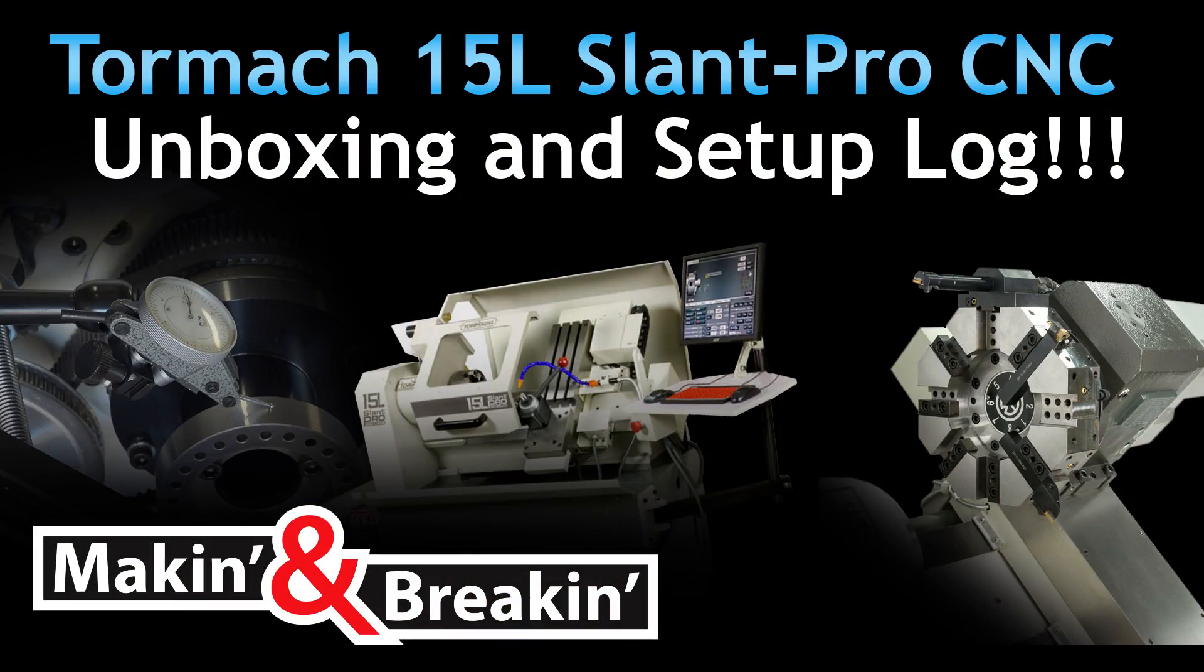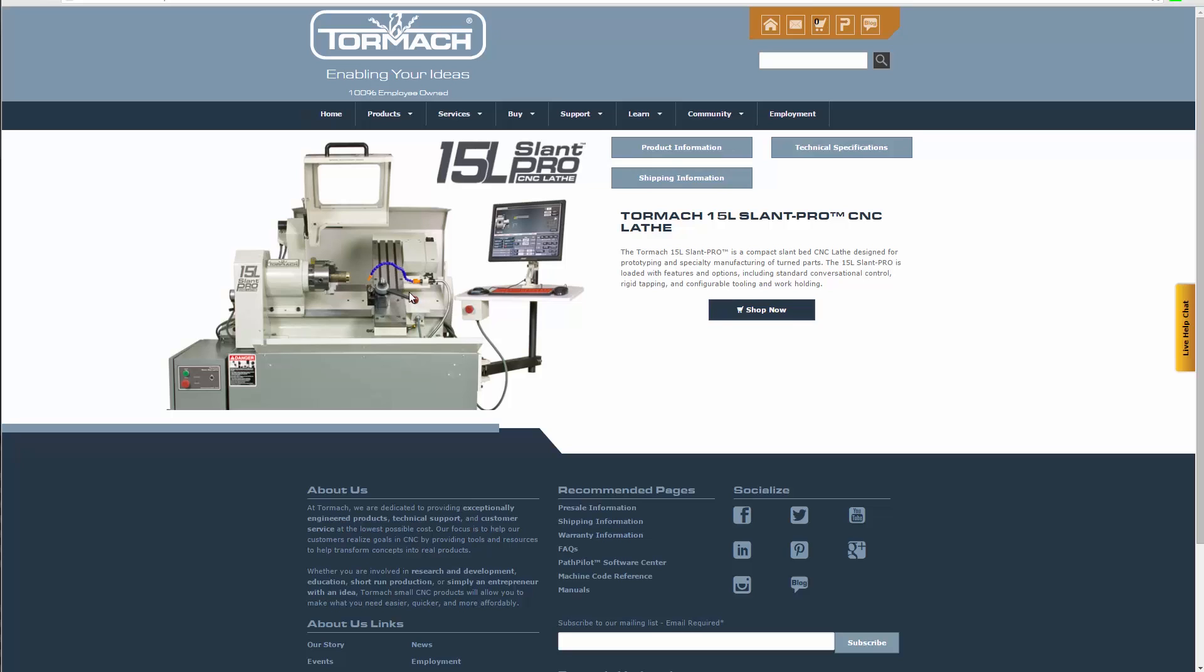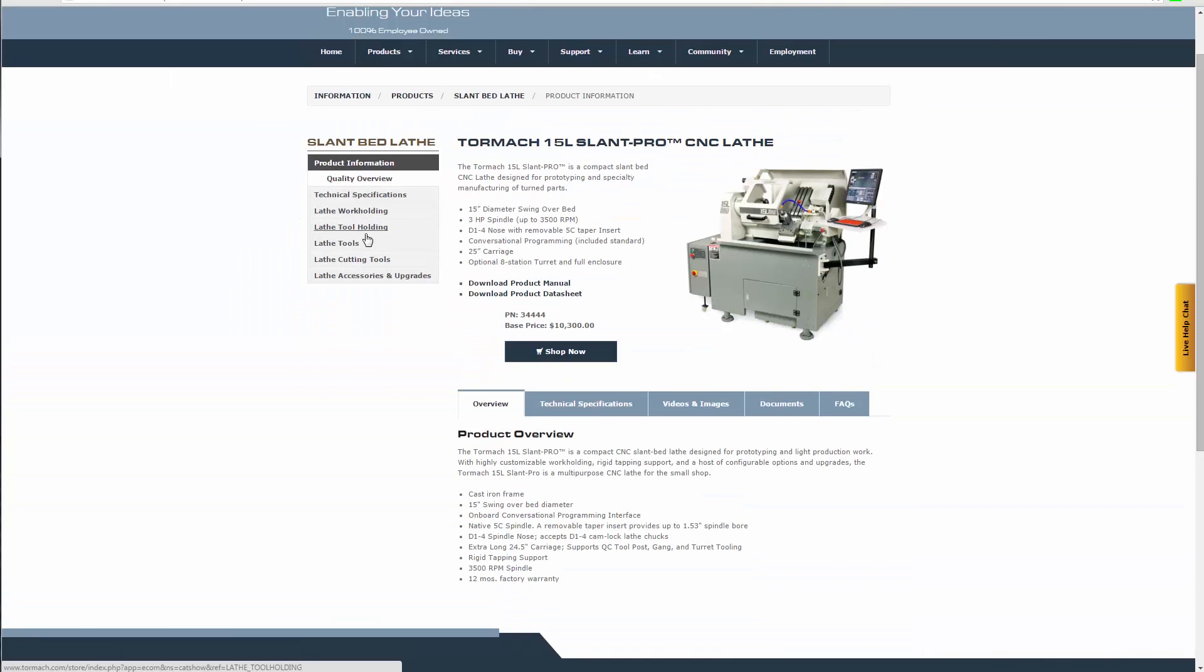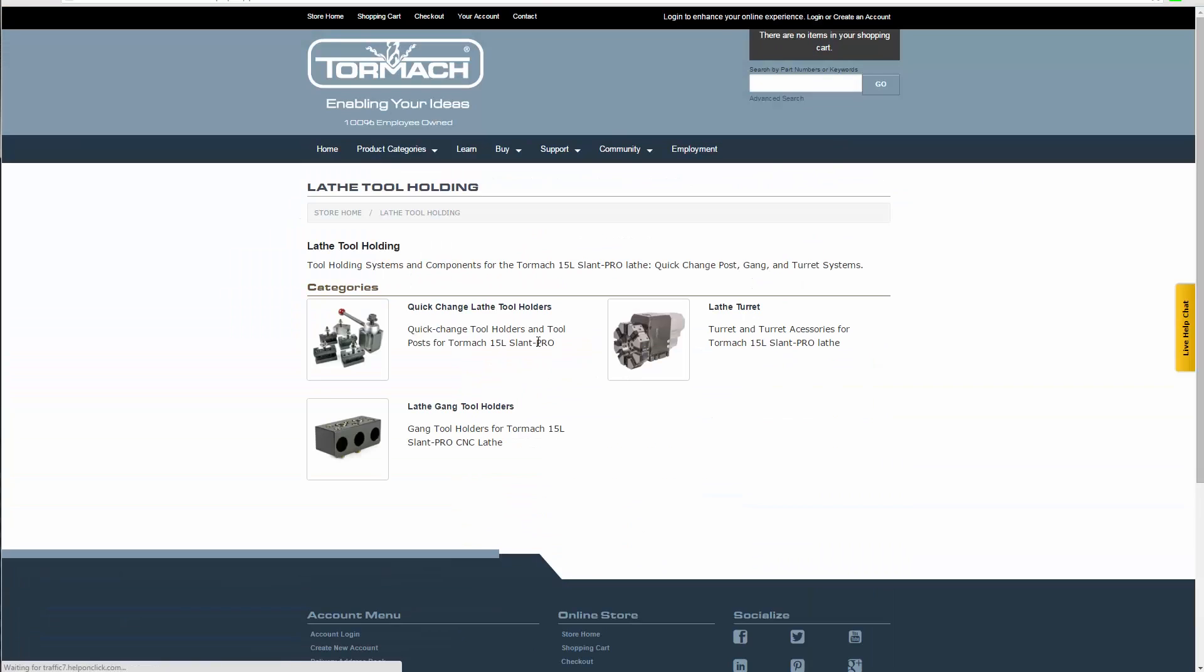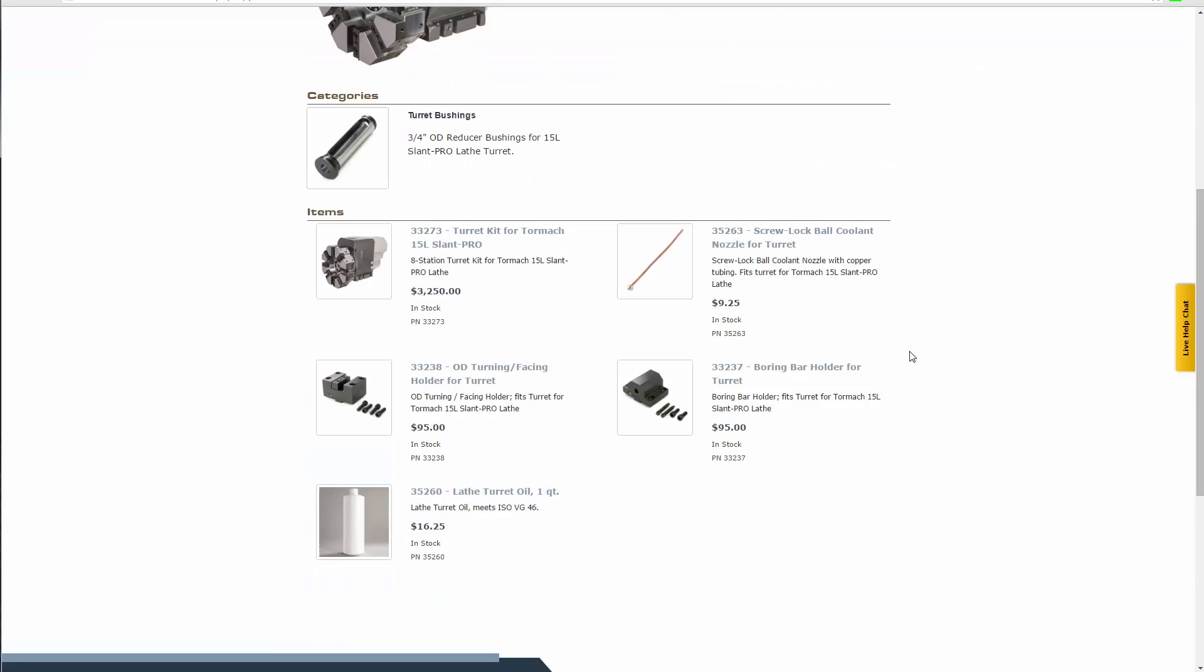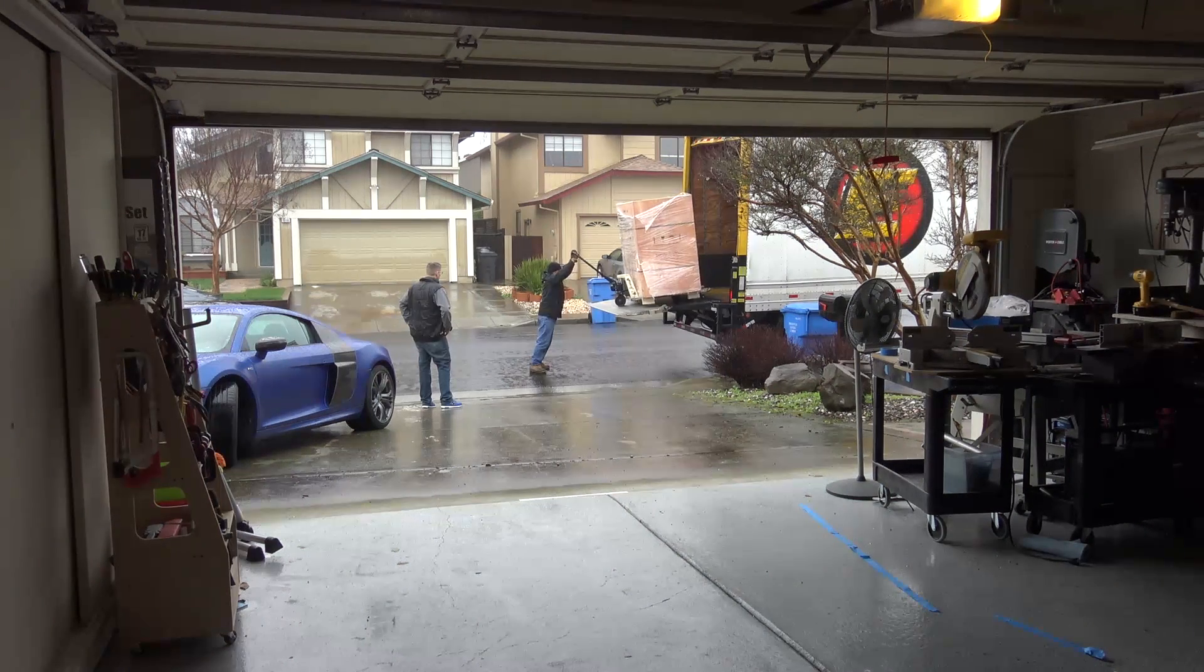There's not really anything else on the market like this lathe. This is a good compromise between size and power. Anything else is going to be like a small CNC conversion or something much more substantial in size and cost. So I've been looking at this thing for about a year and finally decided to order it. I ordered it with a turret and the enclosure, a bunch of tooling, collet closer, pretty much the works. I ordered it Tuesday and things showed up on Friday.